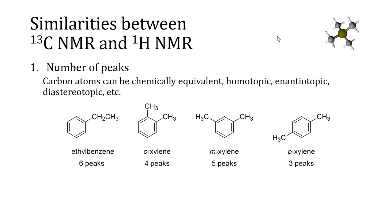Carbon atoms can be chemically equivalent, homotopic, enantiotopic, etc. Here are four constitutional isomers arranged based on the number of peaks — the number of peaks has to do with the level of symmetry within the structure. Ethylbenzene has six peaks, ortho-xylene has four, meta-xylene has five, and para-xylene has three. The first two molecules have planes of symmetry through them, and depending on the structure, there may be more or less atoms on either side of that plane. Para-xylene has two planes of symmetry — see if you can find them.